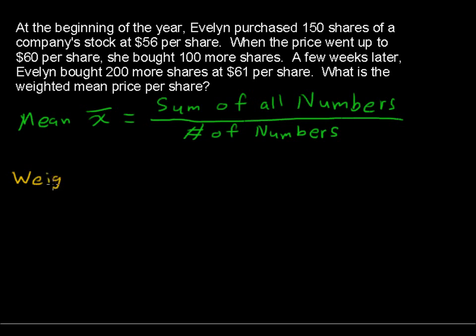The weighted mean is oftentimes denoted x-bar sub w. Let's build that instead of just showing you the formula. Sum of all the numbers: we have 56 that shows up 150 times. I could add 56 plus 56 plus 56, 150 times, or we know that multiplication is just repeated addition. So 150 times 56 is the first component.